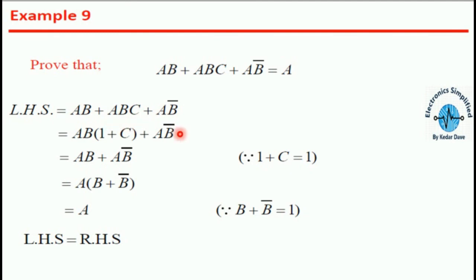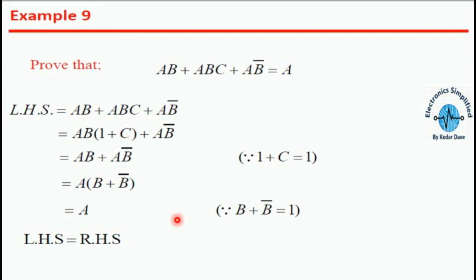Our last sum is ab + abc + ab̄ = a. We take ab as common: ab(1 + c) + ab̄. Since 1 + c = 1, we get ab + ab̄, and b + b̄ = 1, so the result is a, achieving the right-hand side. These are simple examples. Whenever these questions appear in your exam, you must be able to prove left-hand side equals right-hand side. Try different Boolean equations for practice.